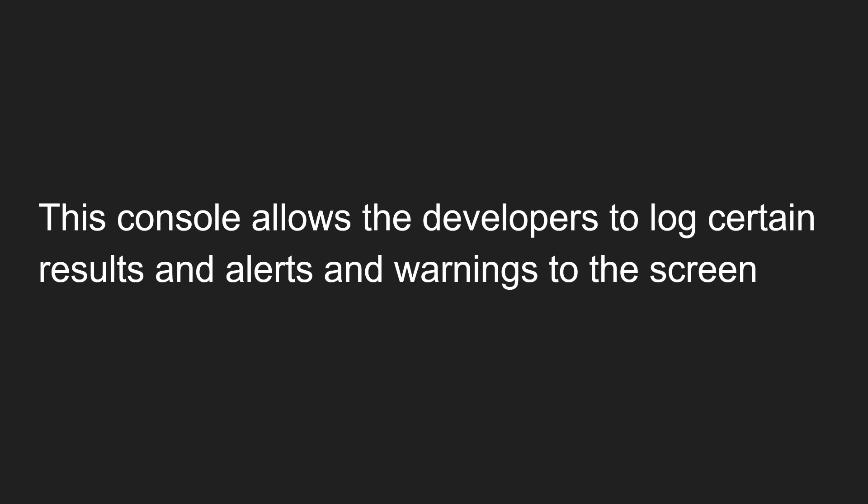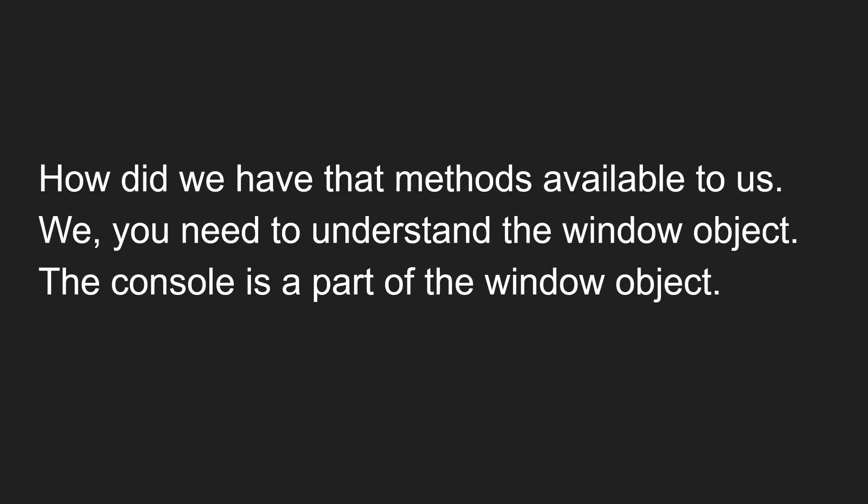This browser console allows developers to log certain results, alerts, or warnings to the screen. If you want to print any warnings, alerts, or results, this console will allow us to log those messages. Now, how did we have those console methods available to us? It's because of the window object — the console method is available because of the window object.